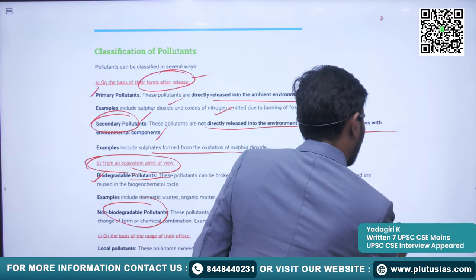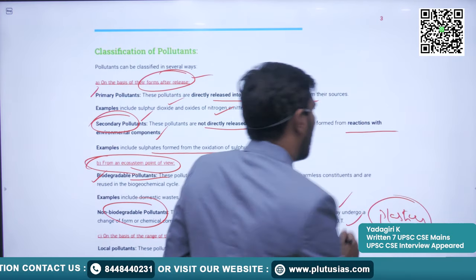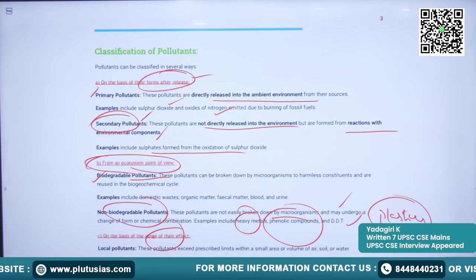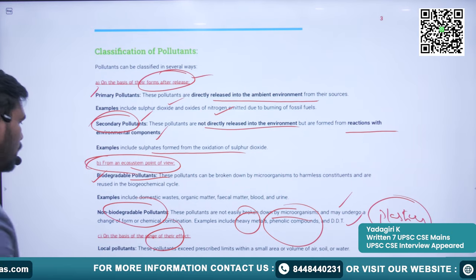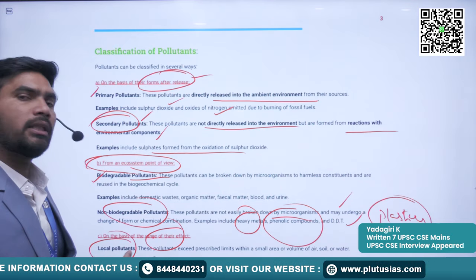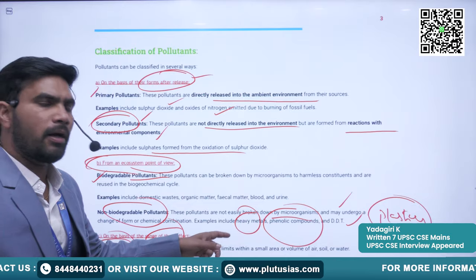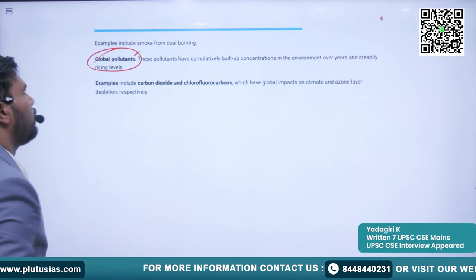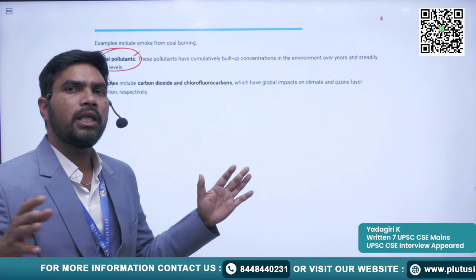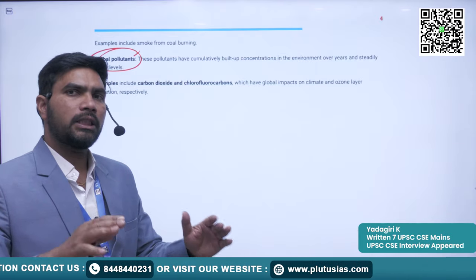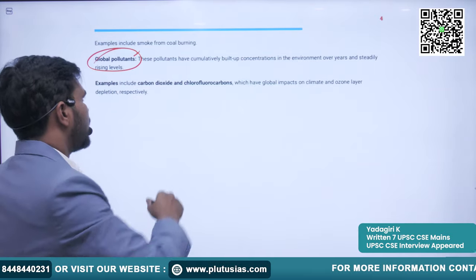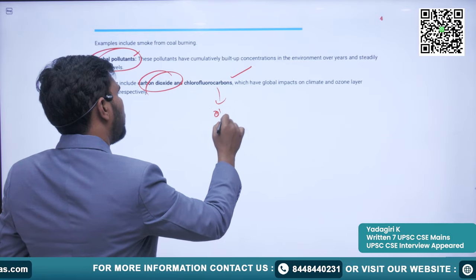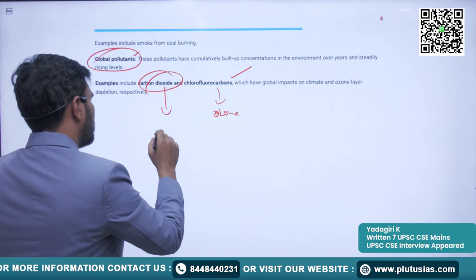Many types of plastics are also non-biodegradable. Another classification is based on the range of effects: local pollutants have impacts confined to the local level where they are released, while global pollutants have effects felt at the global level even when released at a single point. Examples of global pollutants are carbon dioxide, which causes global warming, and chlorofluorocarbons, which cause ozone depletion.